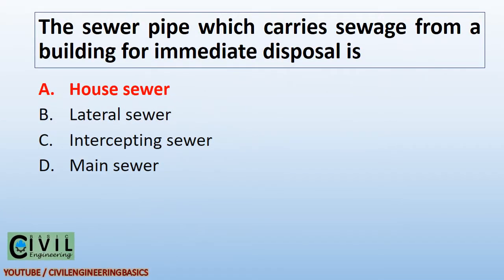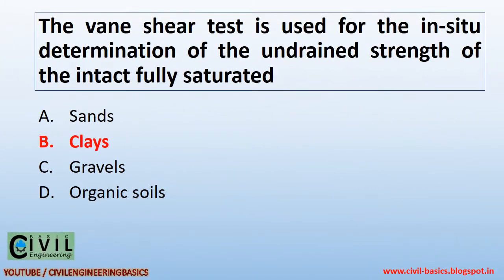The sewer pipe which carries sewage from a building for immediate disposal is a house sewer. The vane shear test is used for the in-situ determination of the undrained strength of intact, fully saturated clays.